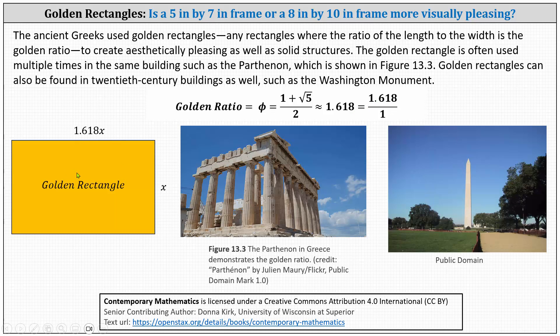On the left, we have an orange golden rectangle. Notice for any positive value of x, the ratio of the length, the longer side, to the width or the shorter side is 1.618, which is an excellent approximation for the golden ratio.